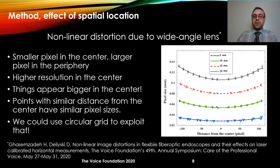Spatial location of the object is another confounding factor we need to account for. In a flexible endoscope, we use a wide-angle lens, and wide-angle lenses introduce non-linear distortion into the images. We have done a separate study on the effect of non-linear distortion. As shown in this figure, when we are at the center of the image, the size of the pixel is minimum, but as we move toward the periphery, the size of the pixel increases.